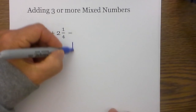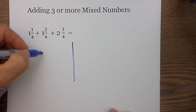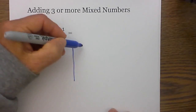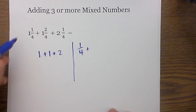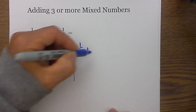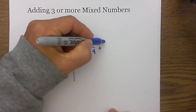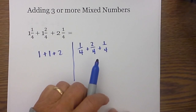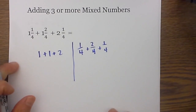The first technique is you put the whole numbers on one side and the fractions on the other side. So I have one plus one plus two, and then one fourth plus two fourths plus one fourth. I then always start on the fraction side, because if you get an improper fraction you will have to move a whole number to the other side.